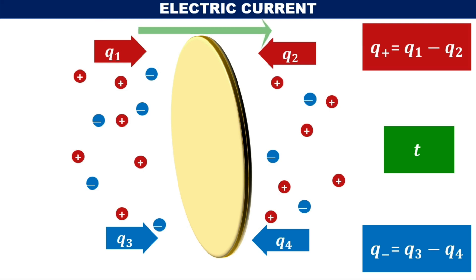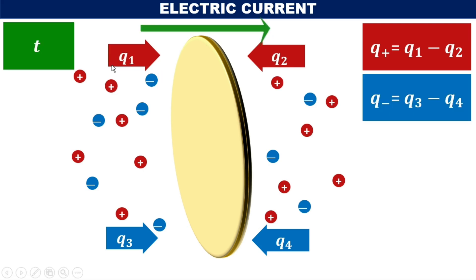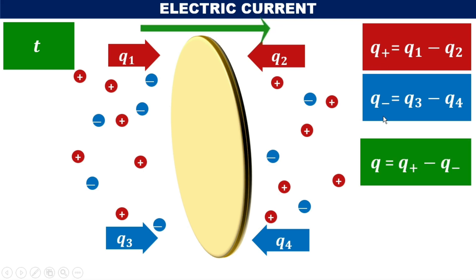Since electric current is constituted by both the motion of positive and negative charges, we consider the net flow of charges across the given area in the reference direction in a given interval of time. That means the net charge Q is equal to the difference between Q+ and Q−, and that is represented as Q.